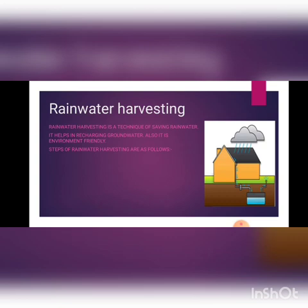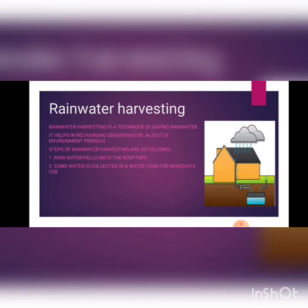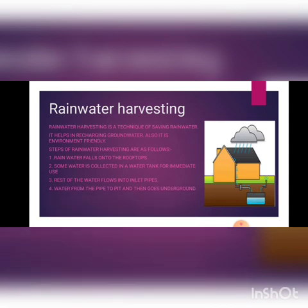The steps to do rainwater harvesting are as follows. Rainwater falls on the rooftops, and some water is collected in a water tank that we make on our roof so that it can be immediately used. The rest of the water flows into a pipe connected to that tank, and from there water moves to a pit and then goes underground. We build a tank under the ground and it gets refilled so that it can be used later.